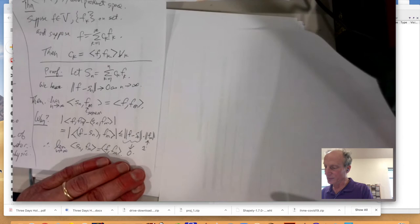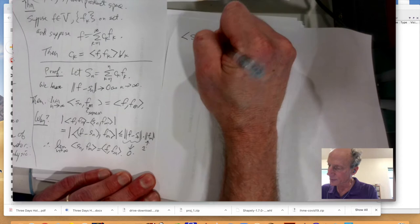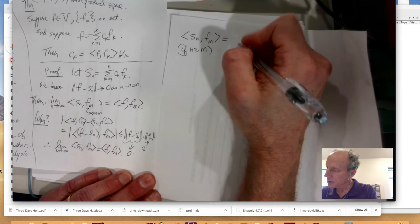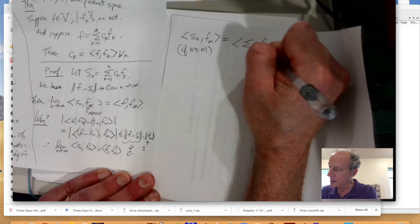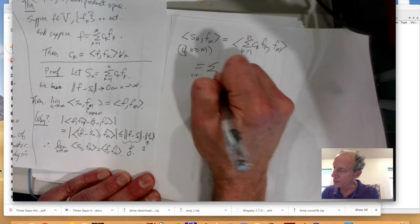Alright, but on the other hand, let's actually compute, we can compute what the inner product of SN with FM is. Okay, and we're going to assume N is greater or equal to M. Okay. Because N is going to infinity. So, yeah, that's cool. Well, actually, we can compute this. So, this is, let's write it down, summation of CK, FK from K equals 1 to N. And then, inner product with FM.